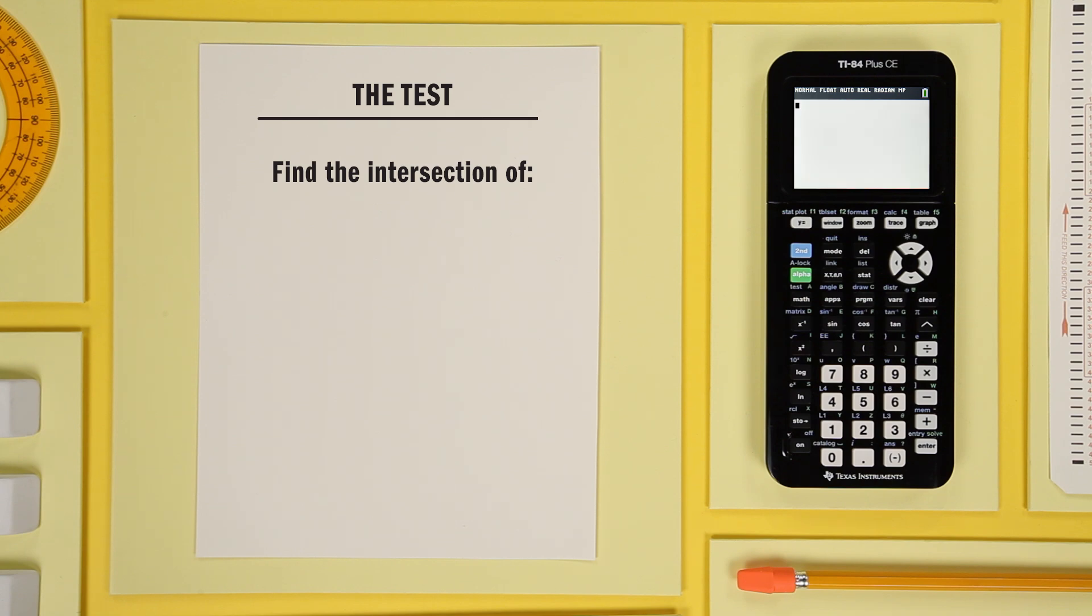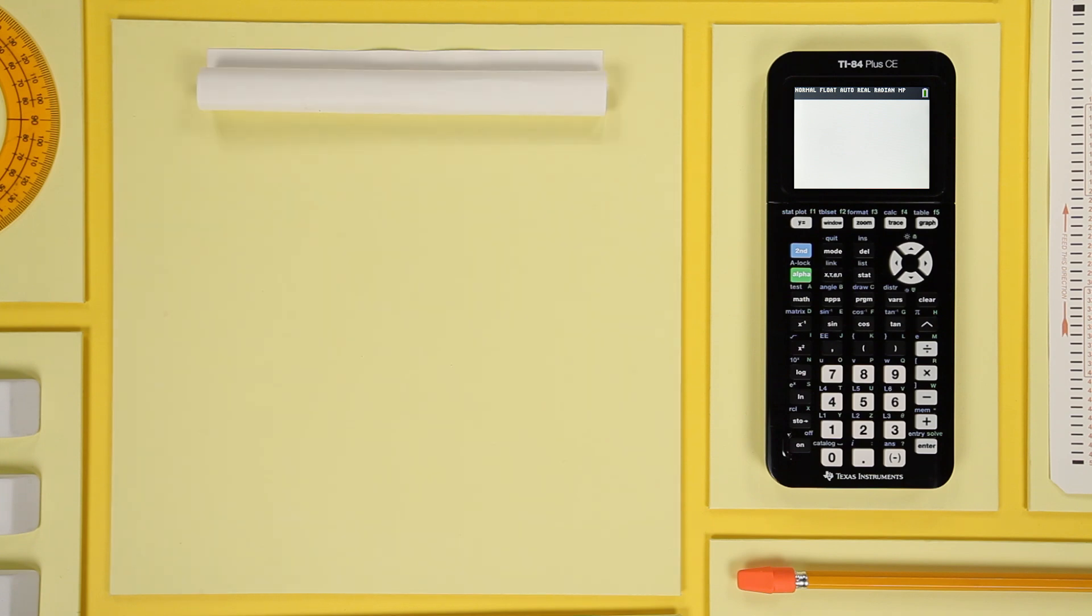Let's look at another example. Where does y equals 4x minus 1 intersect with y equals 2 fifths x minus 1? I'm going to go through it quickly, so get ready.